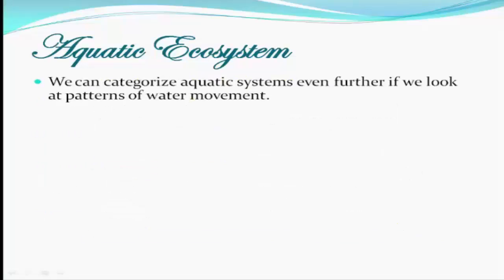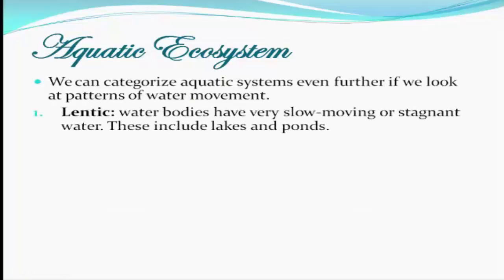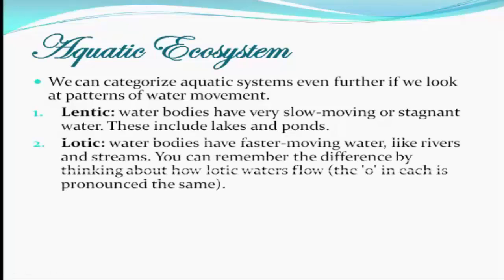We can categorize the Aquatic System even further if we look at patterns of water movement. First, we have the Lentic, which are water bodies with very slow moving or stagnant water, and this includes lakes and ponds.